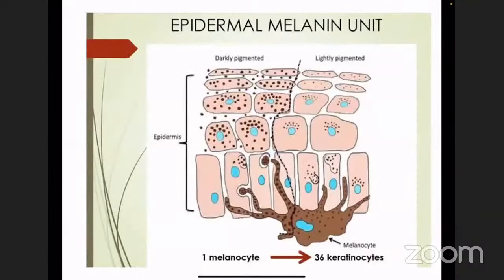The other important value is the epidermal melanin unit, which is 1:36. Since a melanocyte is a neuronal cell with many dendrites and axons, one melanocyte supplies 36 keratinocytes — it gives out processes with melanosomes going to 36 keratinocytes. So: melanocyte-to-keratinocyte ratio is 1:10, and epidermal melanin unit is 1:36.